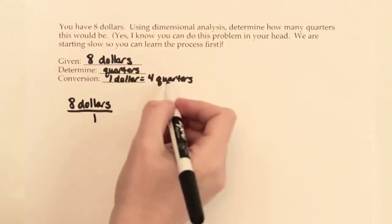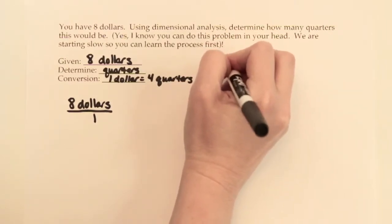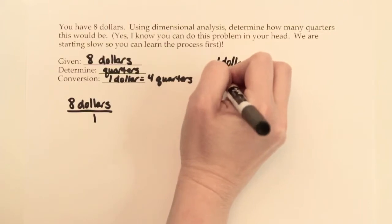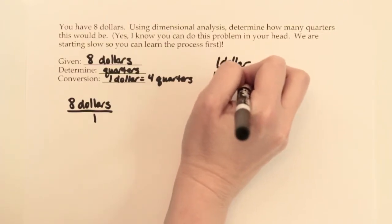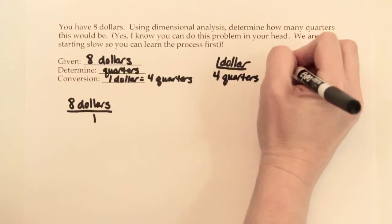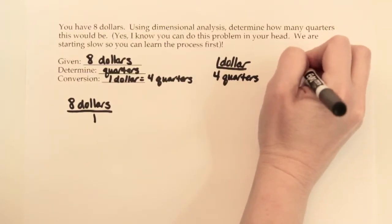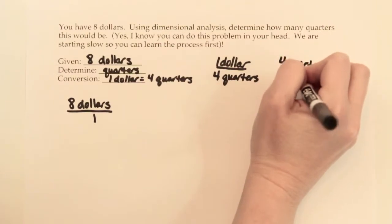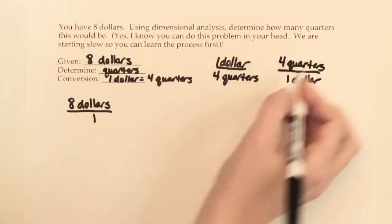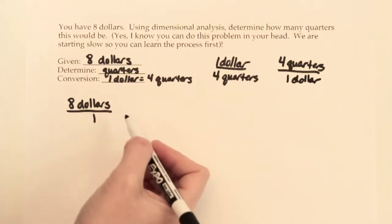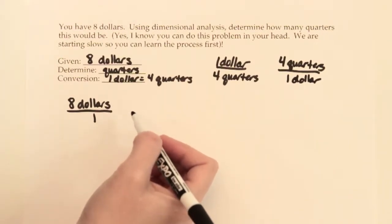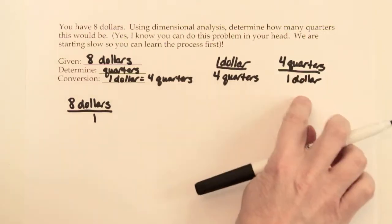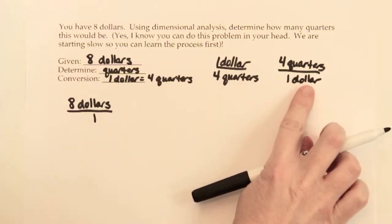...and we can take that conversion factor and write it one of two ways. We could either put $1 over four quarters, like this, or take it and flip it and say four quarters is the same thing as $1. We want our dollars to cancel out and go away, kind of like in that 8 thirds times 3 fourths math problem we did. So I'm going to choose the conversion factor on the right with the dollars on the bottom.